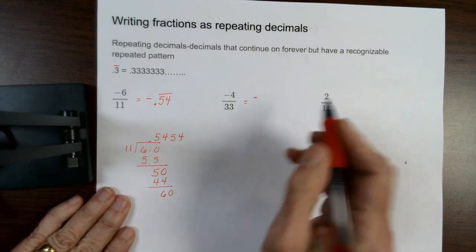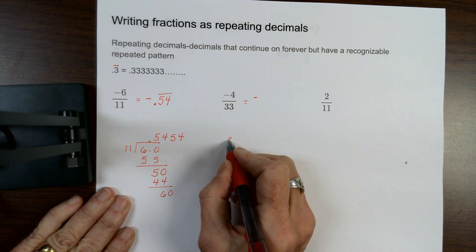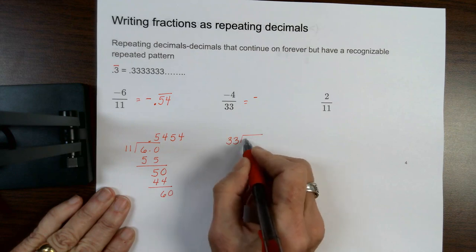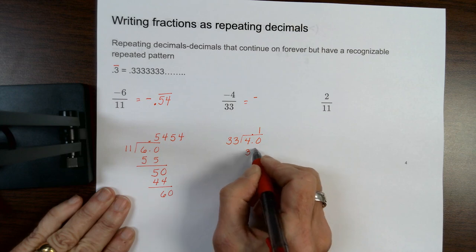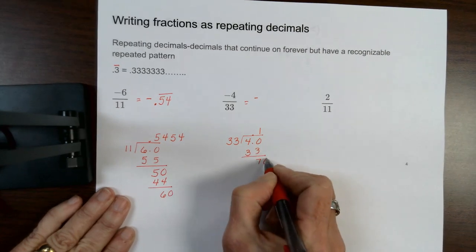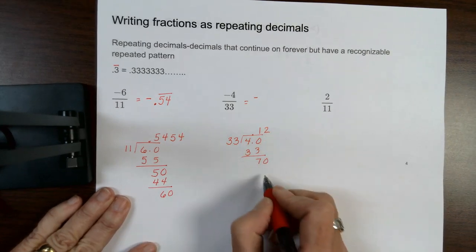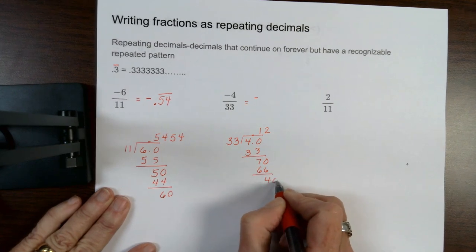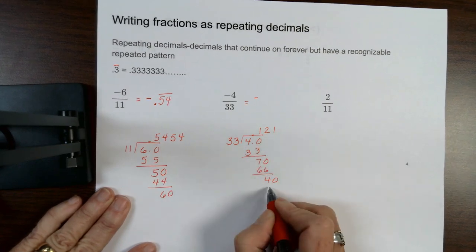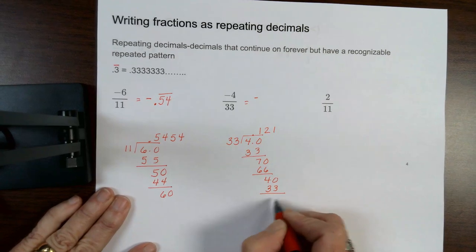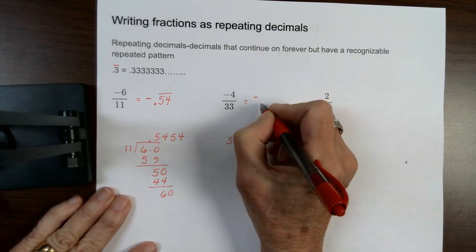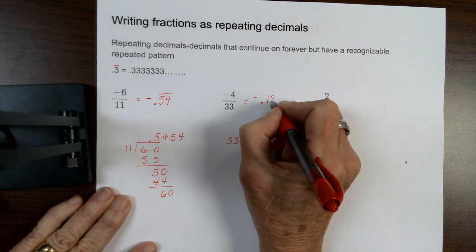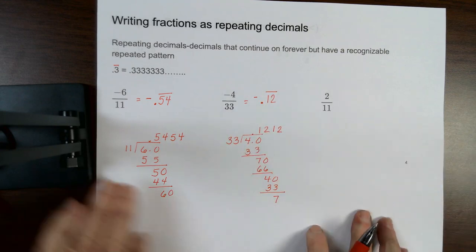This one's going to be a negative as well. So I'm going to go 33 into 4. It's going to go 1 time. And then that's going to go 2 times. And notice that then my pattern repeats again. And I will get a 2 there. So I know my pattern is 0.12 and that continues to repeat.